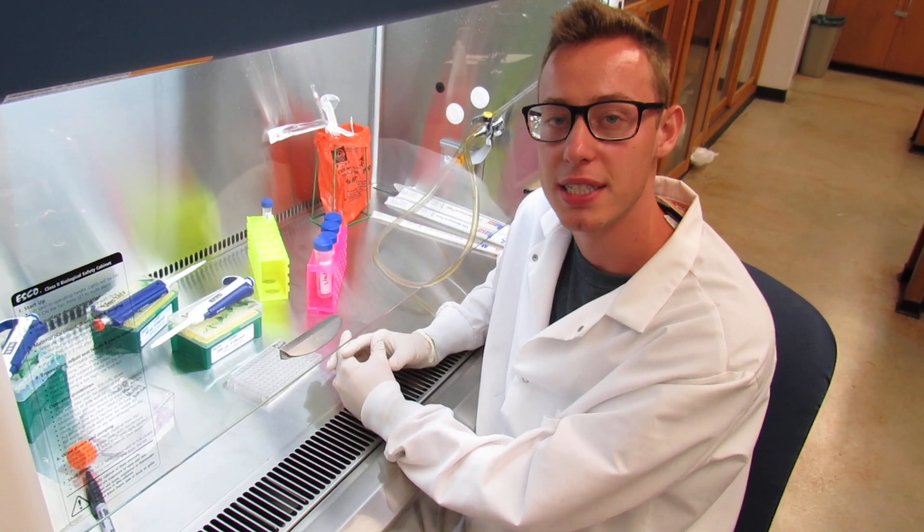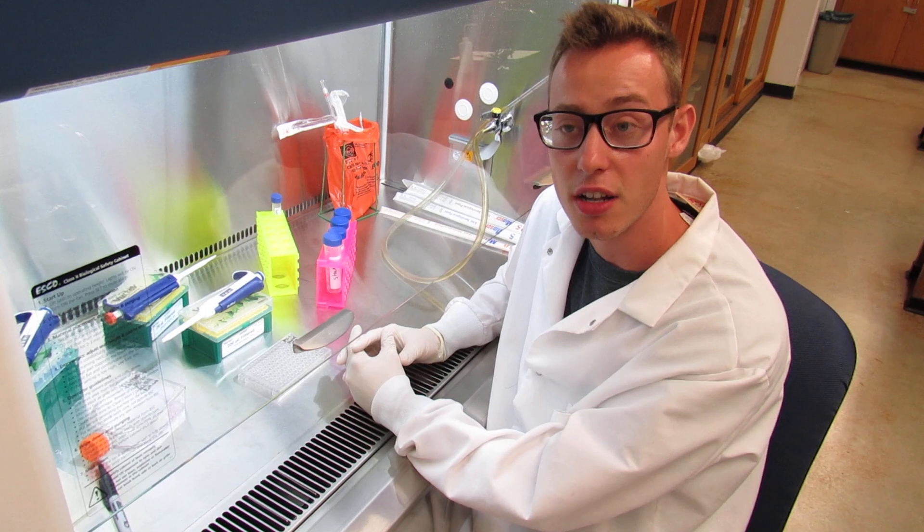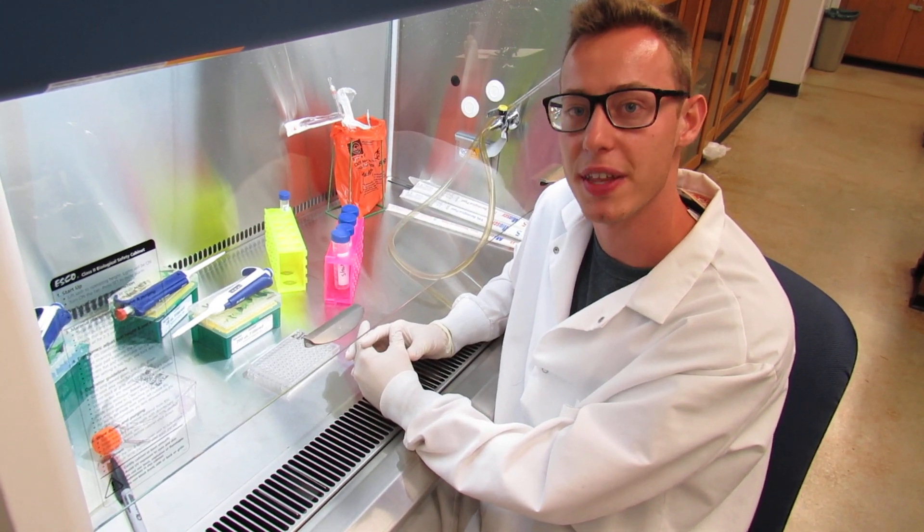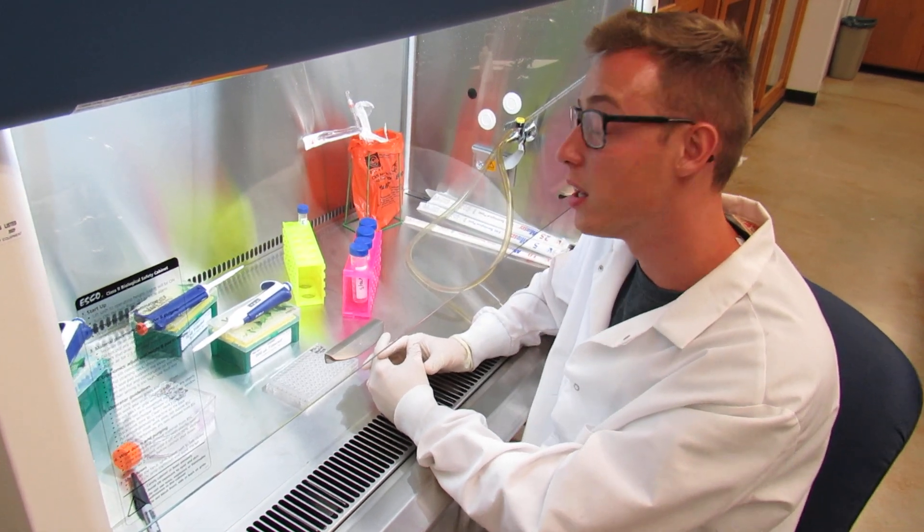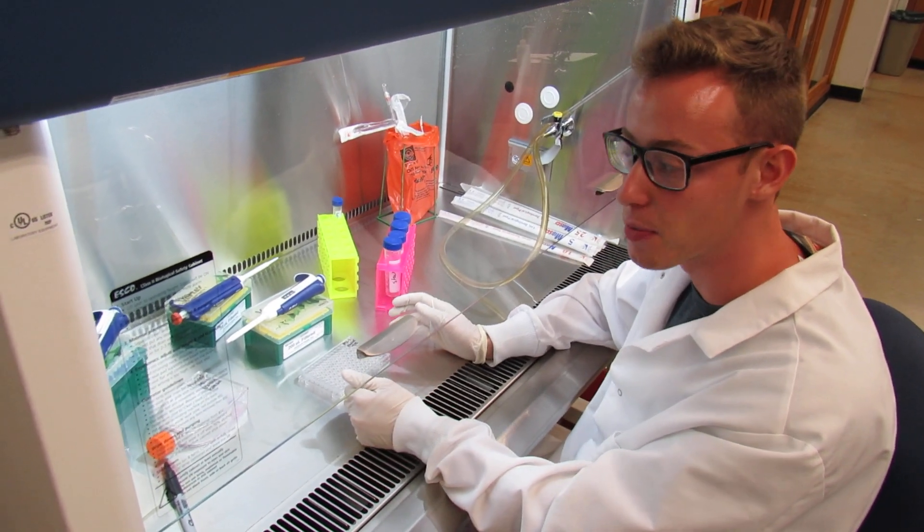After you've successfully used the hemocytometer and come up with an accurate cell number, you and your instructor will come up with a calculation to create a stock used for plating a 96-well plate. Once that stock has been created,